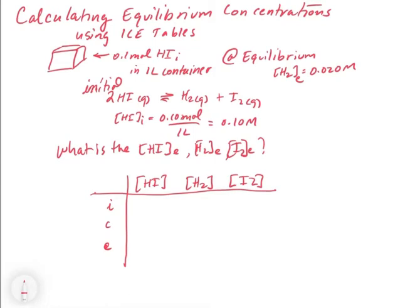We have some things already figured out. Our initial concentration is 0.10 molar for HI — that was told to us: we start with 0.1 moles of HI in a 1-liter container. In this instance, it doesn't tell us anything about H2 or I2. We're starting with only HI, so we put 0 molar and 0 molar for the initial condition there. These will vary depending on what the problem tells you, but here we're just starting with some HI and allowing it to break down into H2 and I2 to reach equilibrium.